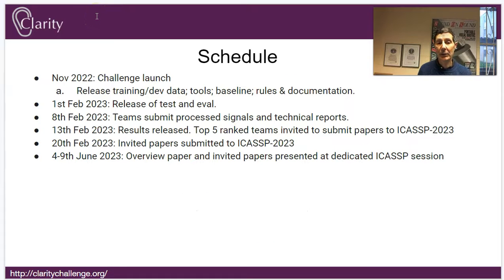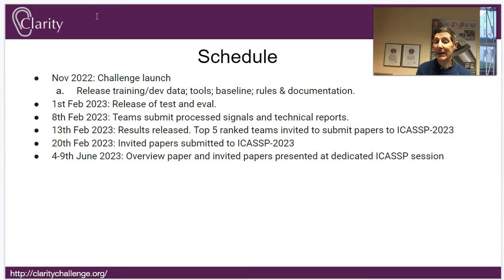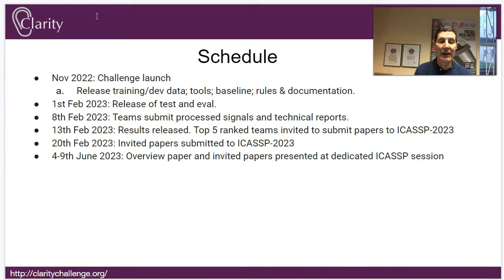Here's the schedule: the challenge has just launched. On the 1st of February you'll receive the test and evaluation sets. On the 8th of February you must submit processed signals and technical reports explaining your processing approach so we can verify rule compliance. We encourage open-sourcing your code, but it's not compulsory. On the 13th of February we release results and rankings, and the top five teams go forward to submit a paper to ICASSP. Papers are then quickly reviewed, and ICASSP itself is in June where we'll have a special session.